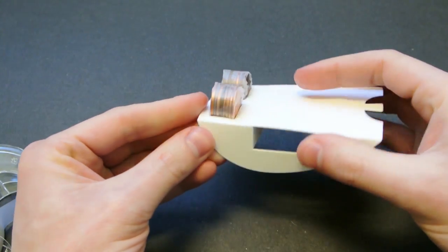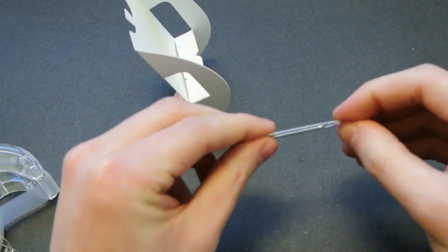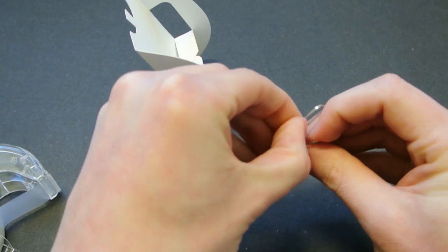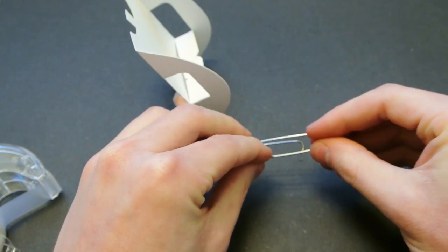Next, we take a jumbo paper clip and bend the two loops apart slightly, and you can set it down on the table so that the largest loop is propped up in the air.